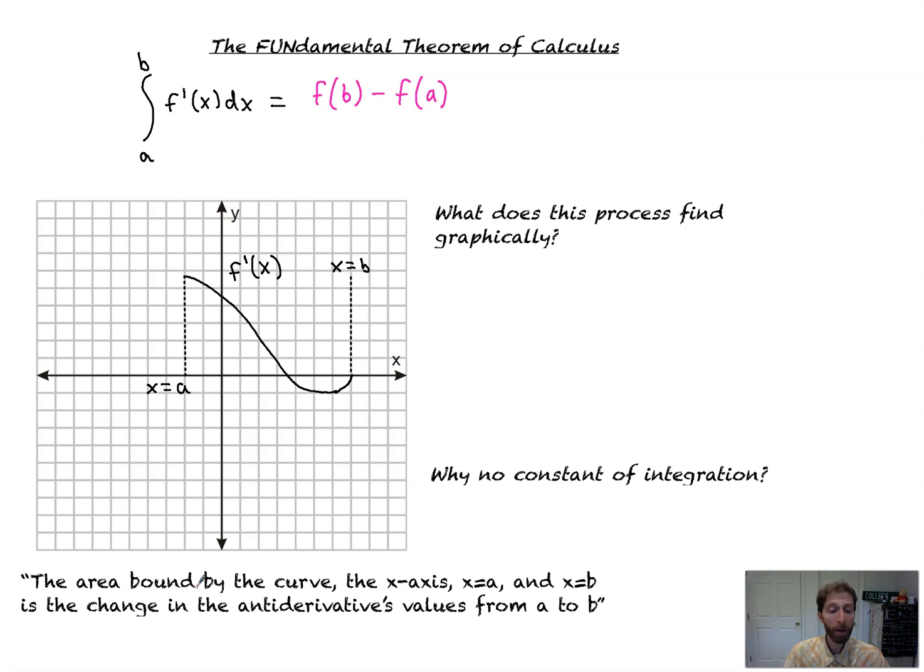The area bounded by the curve f'(x), the x-axis, x equals a, and x equals b is the change in the antiderivative's values from a to b. That would be f(b) minus f(a), very simple.